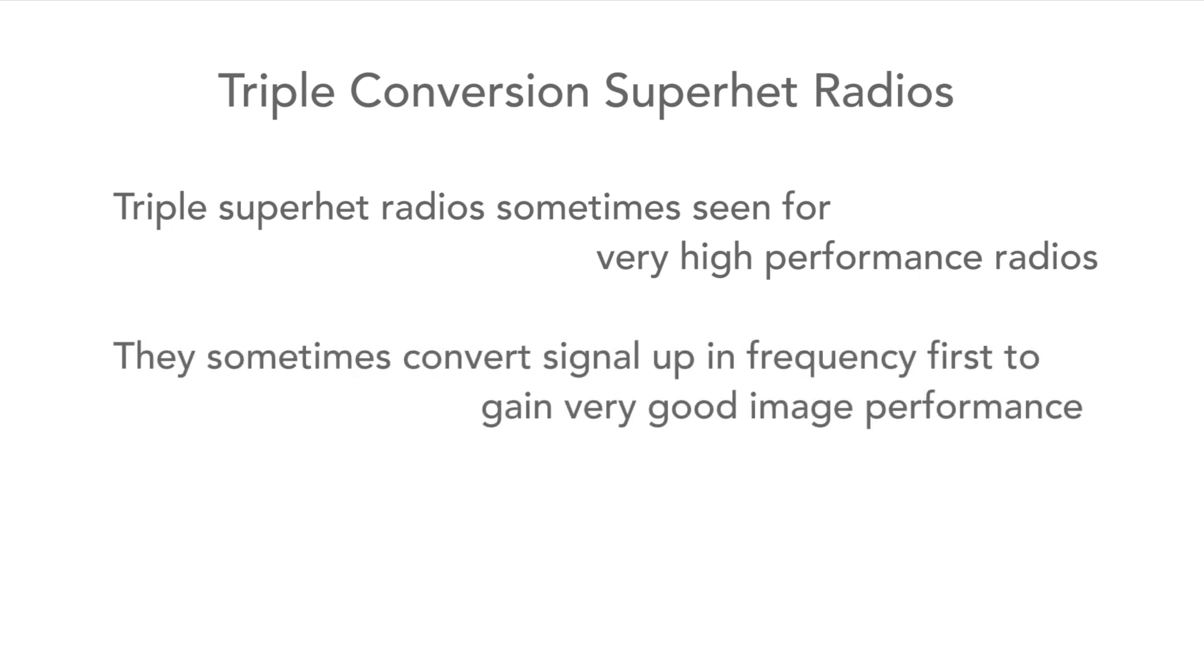Although we've talked mainly about double conversion radios, sometimes triple superhets are seen. These often convert the signal up in frequency first, to gain a very good image performance, and then the signal is converted back down again in stages.